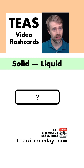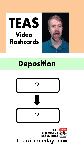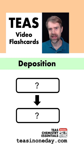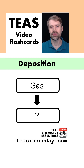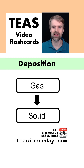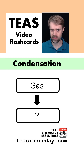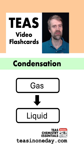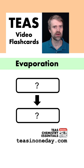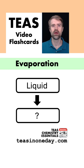Solid to liquid is what? Melting. How about deposition — what to what? Deposition is gas turning directly to solid. Condensation — what to what? Gas turns into liquid. Evaporation: liquid to gas.